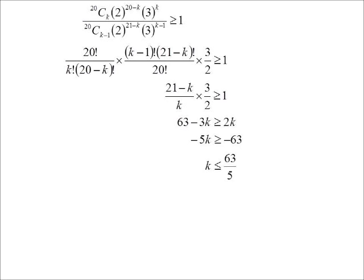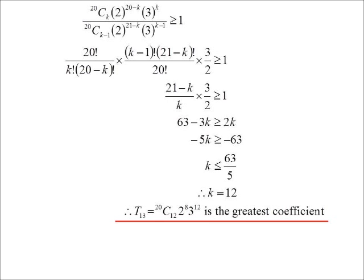Now k's got to be an integer, so in this case it can't equal 63/5. Had it turned out to be an integer, then okay, it could equal that number and you'd probably find there'd be two consecutive terms with the same coefficient. 63 divided by 5—the first integer smaller than that is 12. Now we can work it out, but remember it was term k+1 that was the biggest, so 20C12 times 2^8 times 3^12—that would be the biggest coefficient.